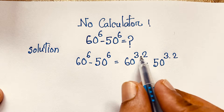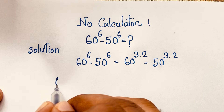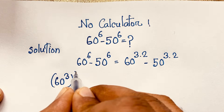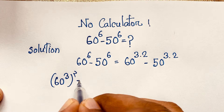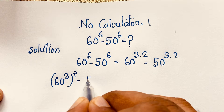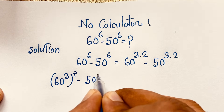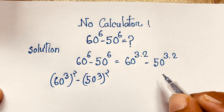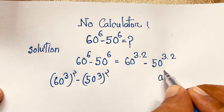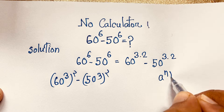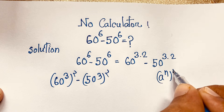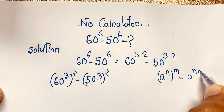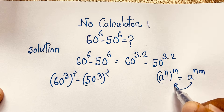So this gives us 60 power 3, bracket whole to the power 2, minus 50 power 3, bracket whole to the power 2. I apply the math formula: a to the power n, bracket whole to the power m, equals a to the power n times m.